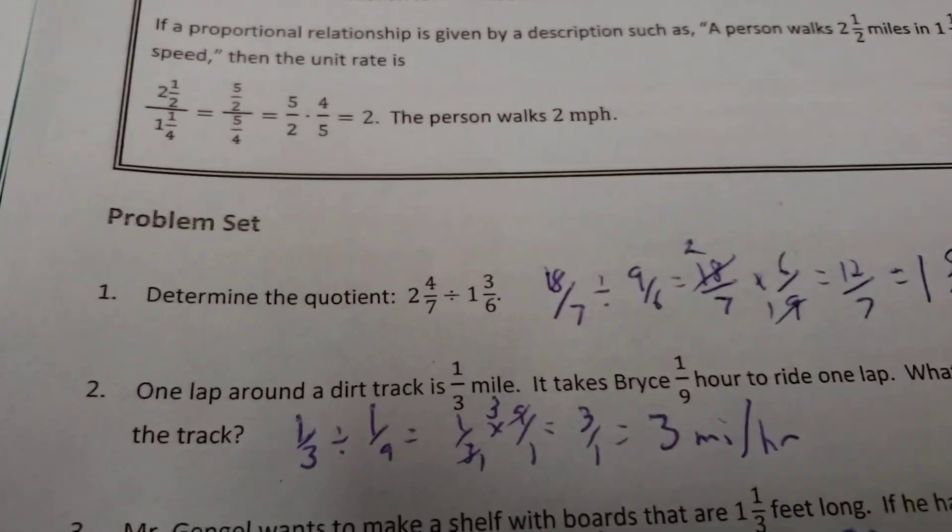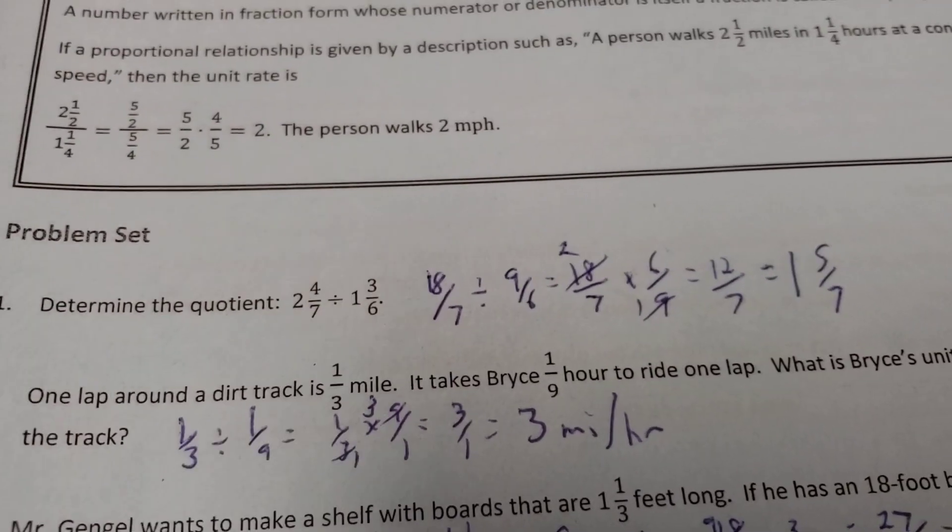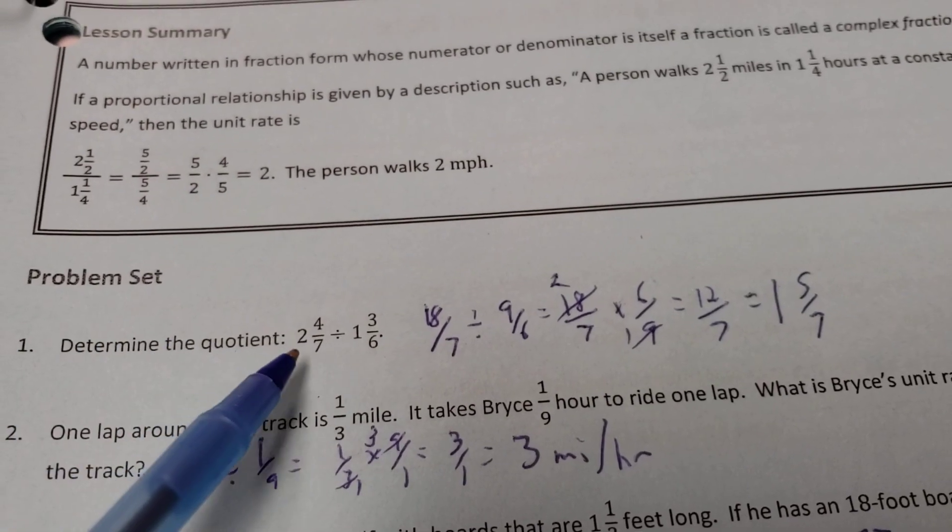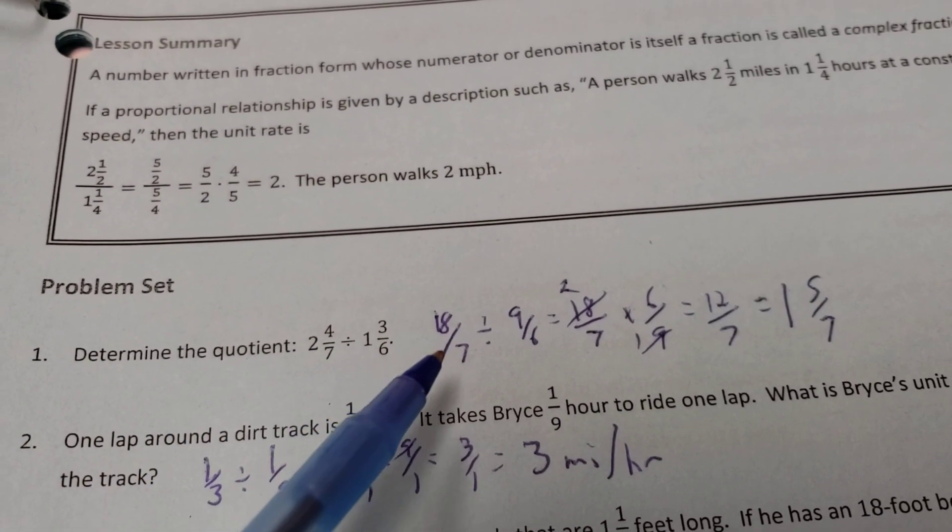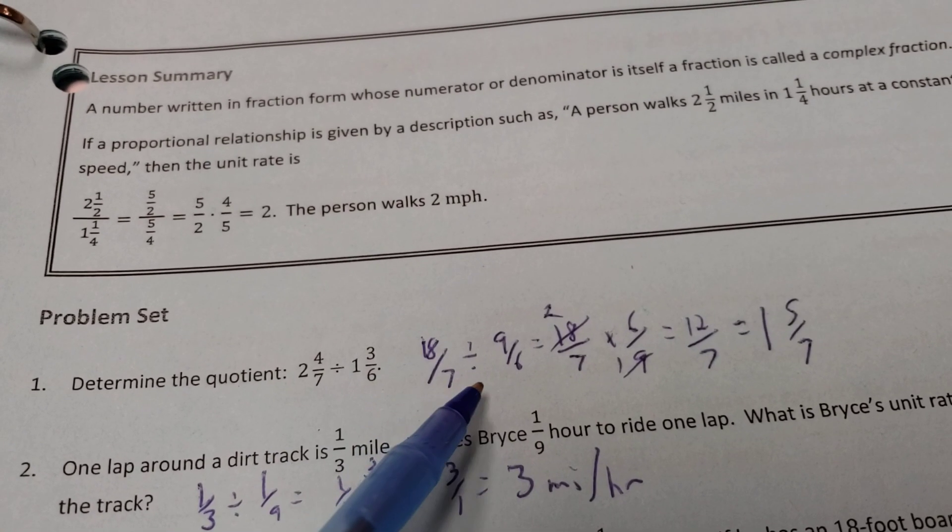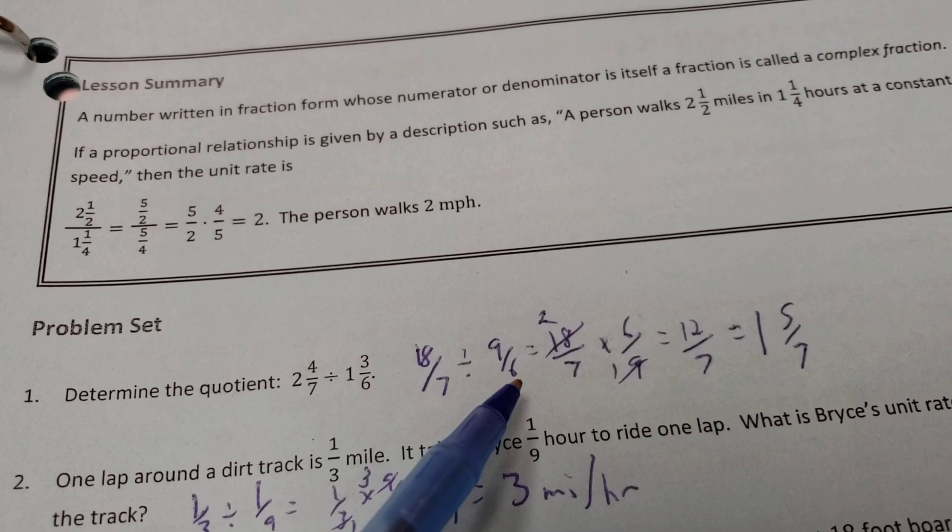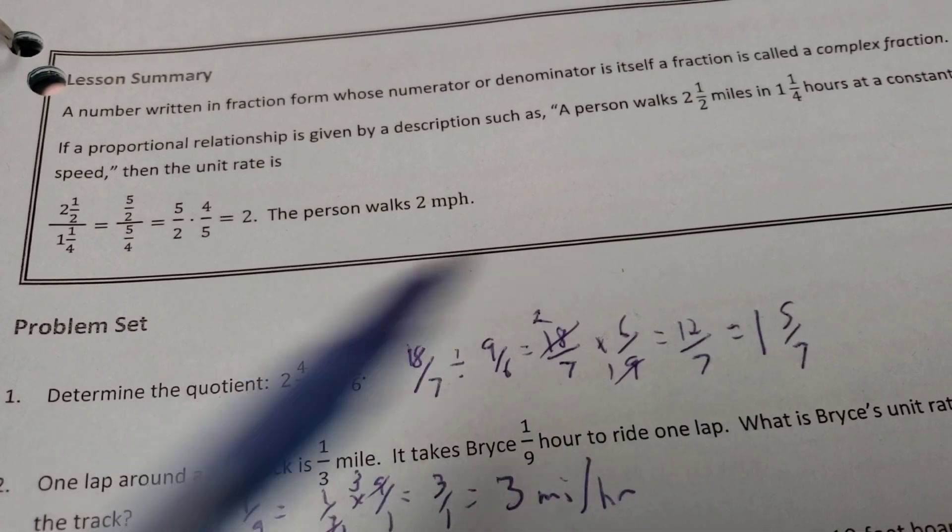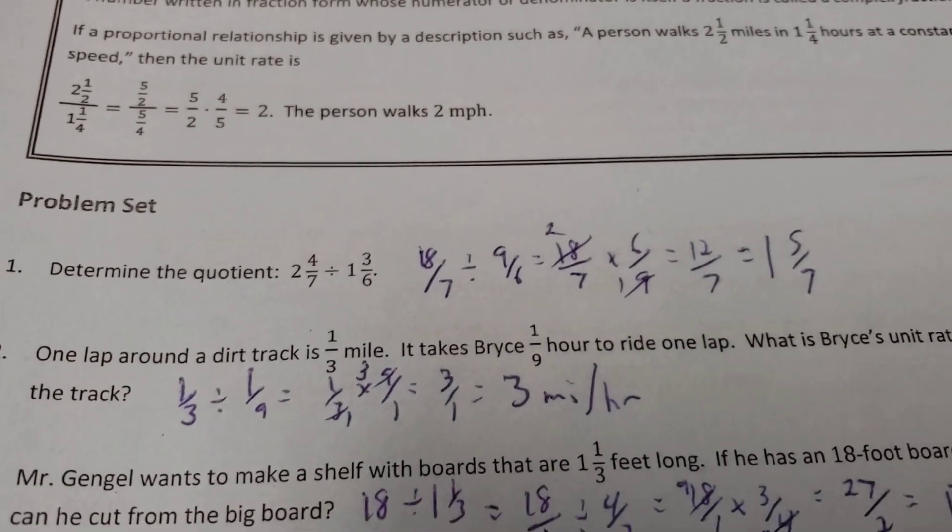Now, over here, we have just a few examples to look at. We have 2 and 4/7ths divided by 1 and 3/6ths. Well, just convert those to improper fractions. Divide, 18/7ths divided by 9, 9 over 6. Keep, change, flip, and you can kind of see the work from there. We did problems like this earlier this year.